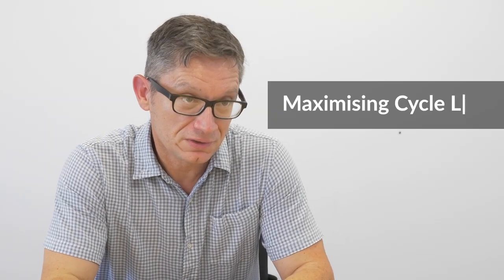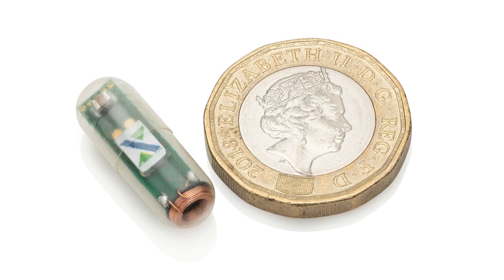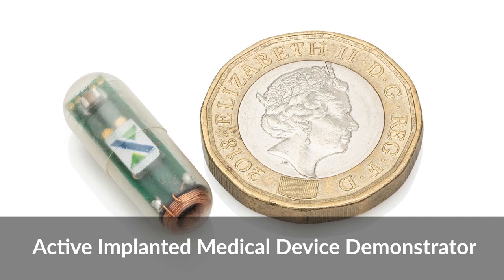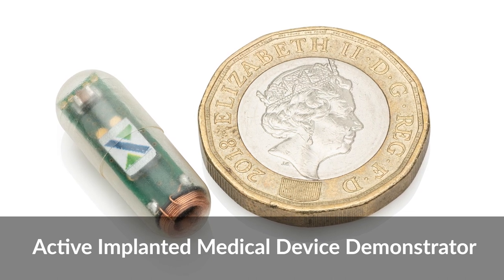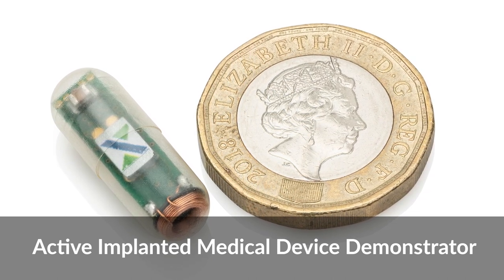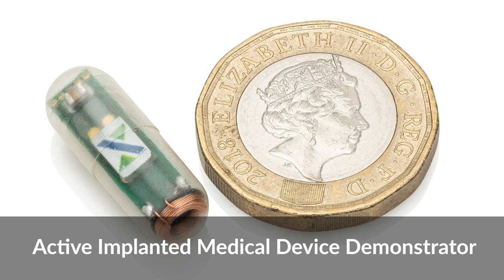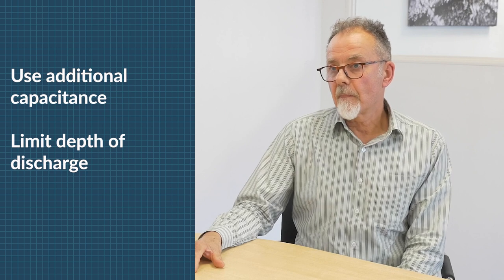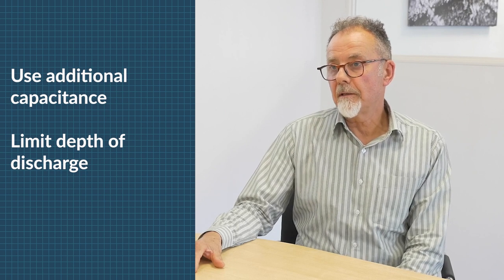Designers of medical implanted devices or IoT perpetual beacons want high cycle life. What do you do to get the best cycle life out of a Stereax battery? So we can maximise the number of cycles we can get out of a Stereax battery in a couple of ways. We can firstly add some additional capacitance so that the energy that's being required by the load comes from the capacitance rather than directly from the battery. Secondly, we limit the depth of discharge of the battery and this will allow more cycles to be available.